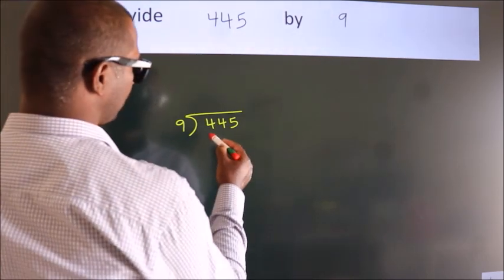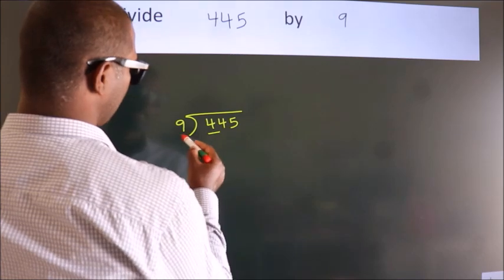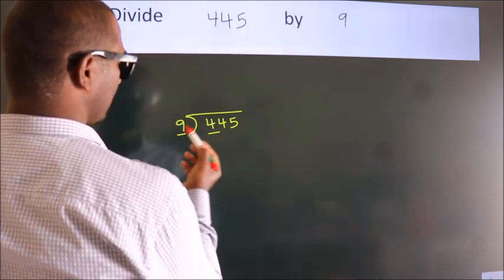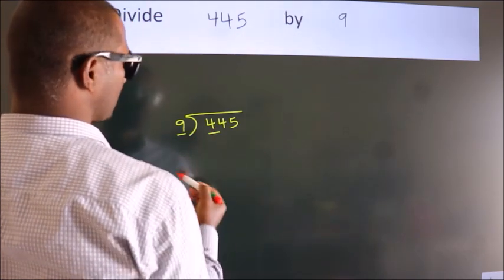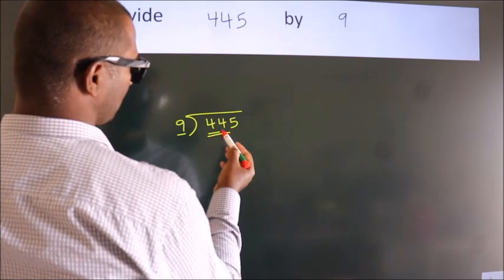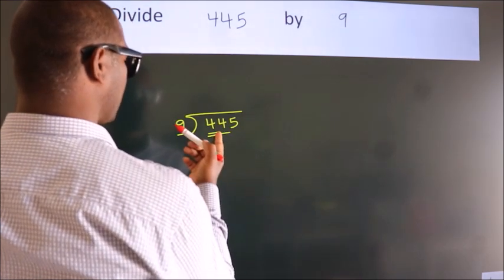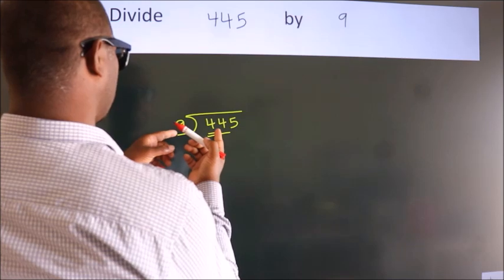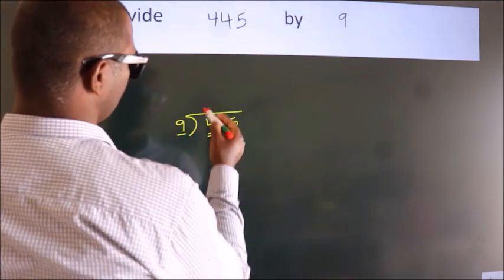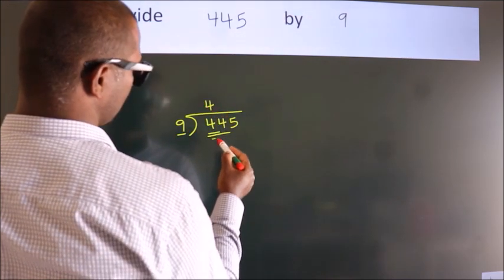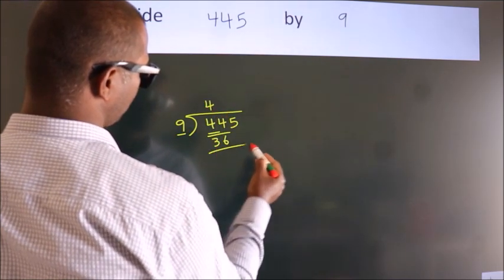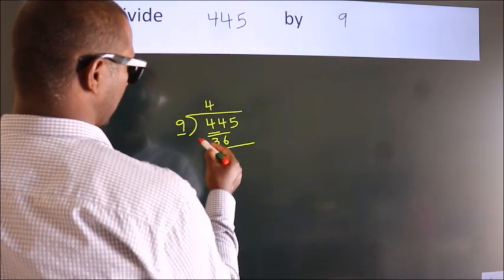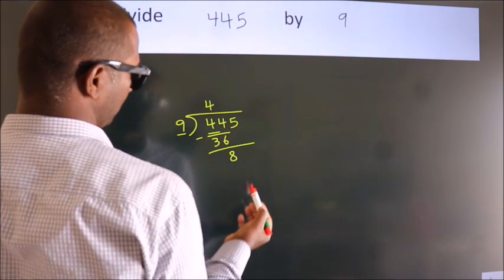Here we have 4, and here 9. 4 is smaller than 9, so we should take 2 numbers: 44. A number close to 44 in the 9 times table is 9 fours — 36. Now we should subtract and we get 8.